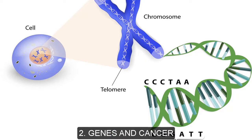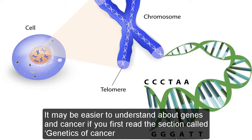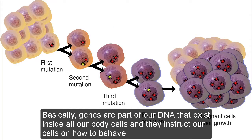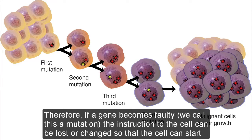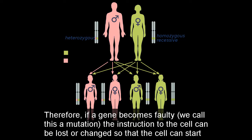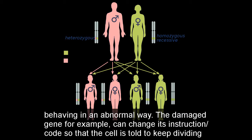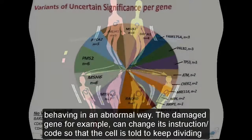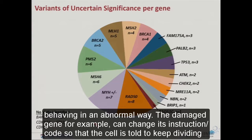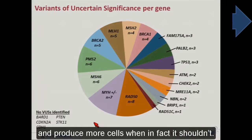2. Genes and Cancer. It may be easier to understand about genes and cancer if you first read the section called Genetics of Cancer. Basically, genes are part of our DNA that exist inside all our body cells and they instruct our cells on how to behave. Therefore, if a gene becomes faulty — we call this a mutation — the instruction to the cell can be lost or changed so that the cell can start behaving in an abnormal way. The damaged gene, for example, can change its instruction code so that the cell is told to keep dividing and produce more cells when in fact it should not be.